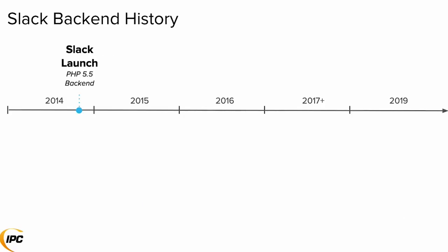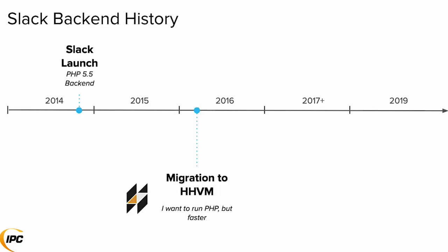Some history on this code base: Slack launched in early 2014 with a PHP 5.5 backend, and we migrated to HHVM in early 2016. The reason for this was really about performance — at that time, HHVM was much faster than PHP 5, so it was really about just getting the speed out of there.